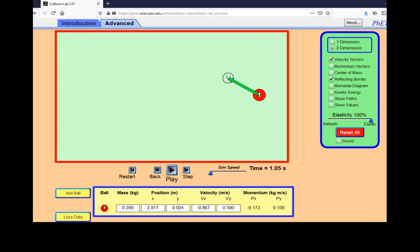Notice that the magnitude in both the x and y direction was preserved. In the x direction, the momentum changed signs. In the y direction, it did not.